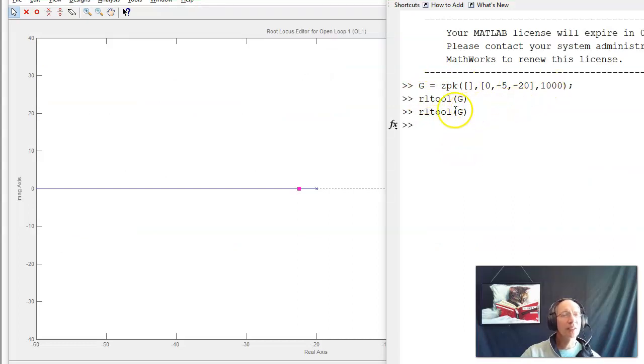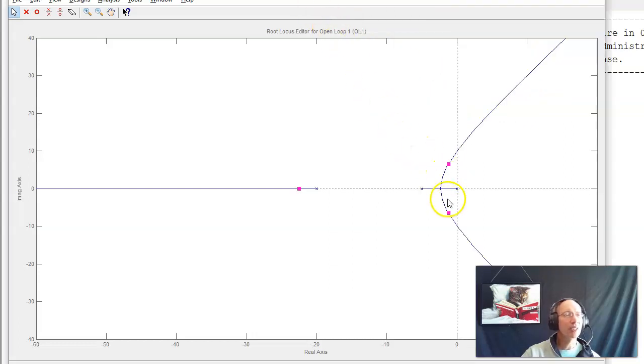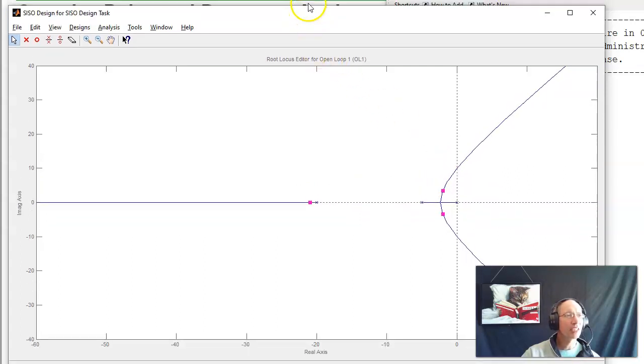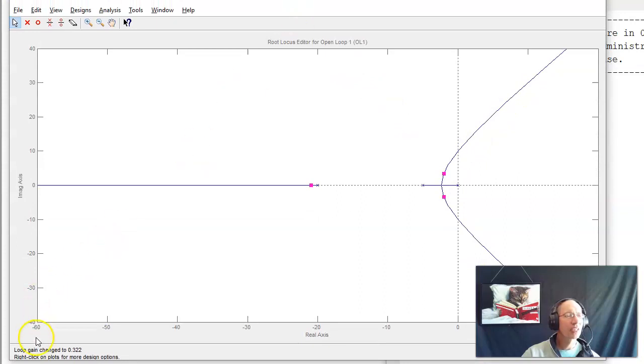In MATLAB, if I input a system and do rlocus, it'll draw the root locus of G. If I do rltool, rltool is kind of a neat program. This is the root locus with poles at 0, minus 5, minus 20. And I can sit there and say, where do I want to put the poles? Let's say right here. And it tells me, I guess you can't see it. There it is. Down at the bottom of the screen, for this spot, the gain is 0.322. So as I move along, the gain changes.